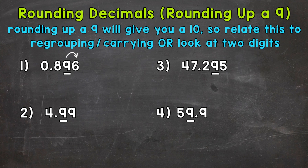If we round up a 9, we get 10. So we put the 0 in the hundredths place, and then regroup or carry the 1 from that 10 over to the next place to the left — in this case, the tenths place. In the tenths, we have 1 plus 8, which gives us 9. So 896 thousandths rounds to 90 hundredths.